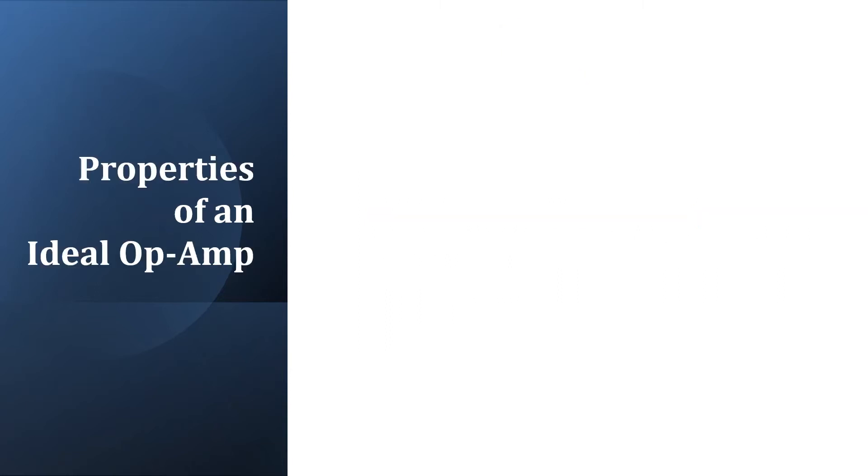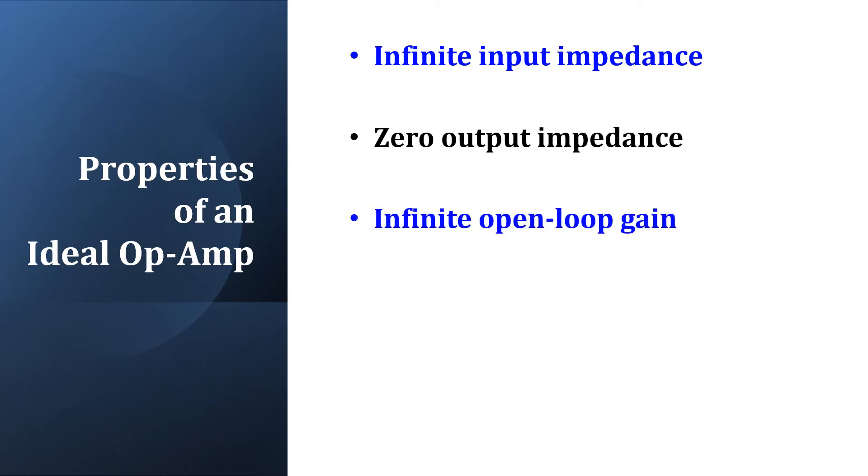State five properties of an ideal op-amp: Infinite input impedance, zero output impedance, infinite open loop gain, infinite bandwidth, and infinite slew rate.